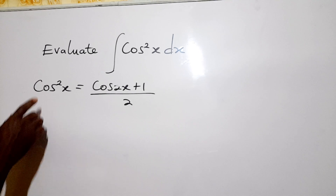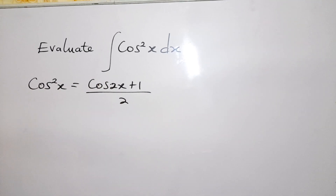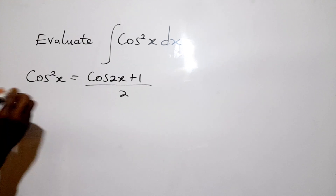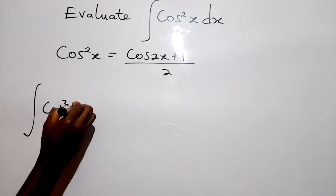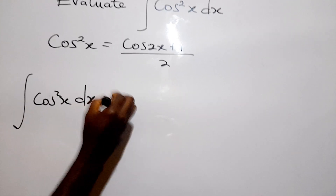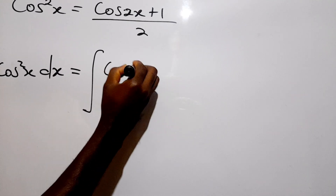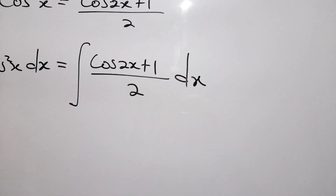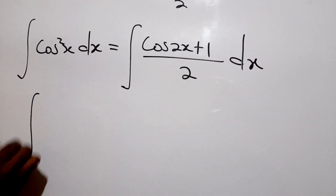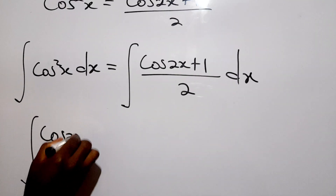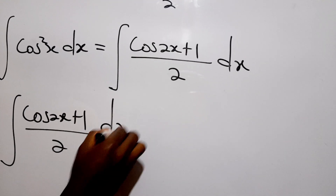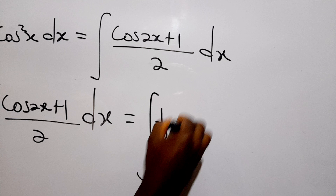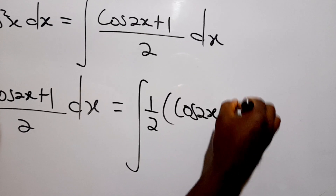So we have identified that cos squared x is equal to (cos 2x + 1) over 2. In place of cos squared x dx we can substitute this identity. So our problem, the integral of cos squared x dx, becomes the integral of (cos 2x plus 1) over 2 dx.